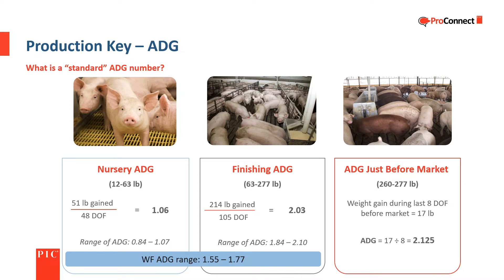As pigs get closer to market weight, the average daily gain increases. In the example, just before market, the pig gained 17 pounds during the final eight days on feed. When we divide the 17 pounds gained by the eight days on feed, we get an average daily gain of 2.13 pounds.